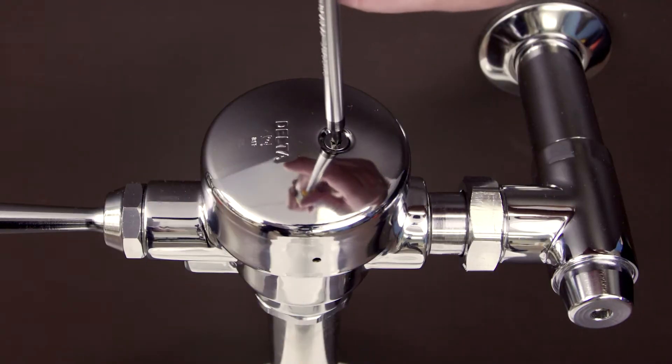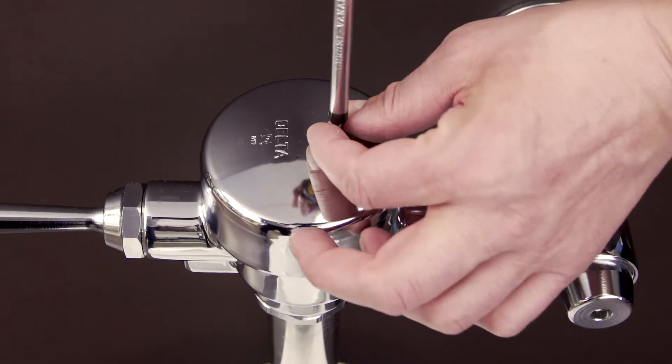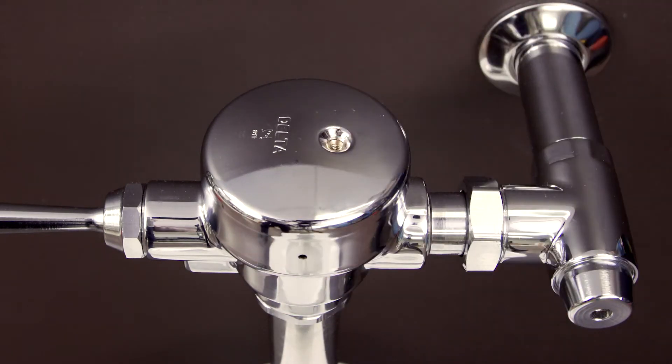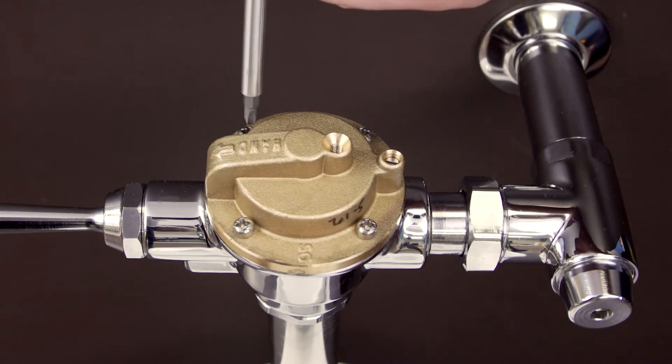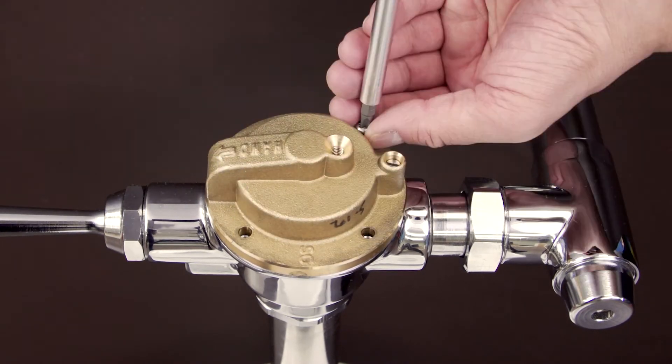Remove the cover screw using an 8-point star bit. A number 3 Robertson screwdriver should work as well. Now, remove the cover. Use a Phillips screwdriver to unscrew and remove the cast cap.